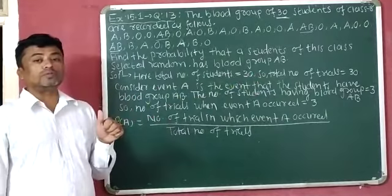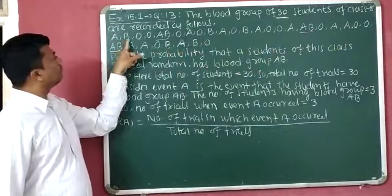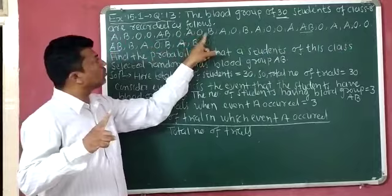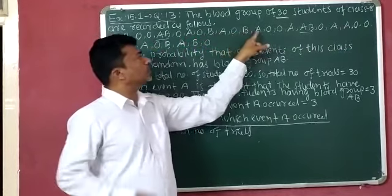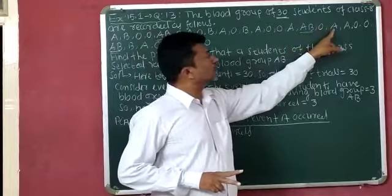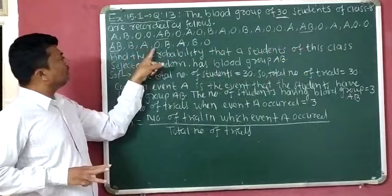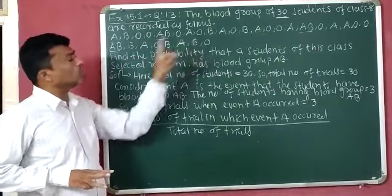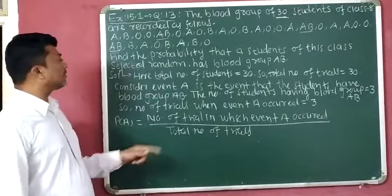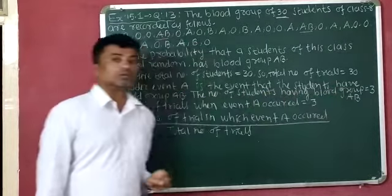We will identify blood group AB from the data. Reading through the list: A, B, O, A, AB — first AB found. Then O, A, O, B, A, O, B, A, O, O, A, B. Next: O, A, O, O, then AB — second AB. Then B, A, O, B, A, B, O. So only 3 students have blood group AB. The number of students having blood group AB is equal to 3.